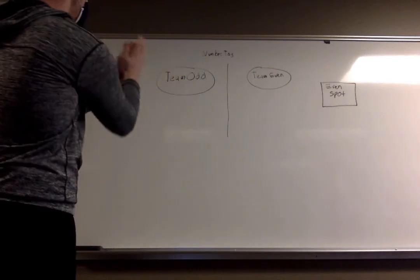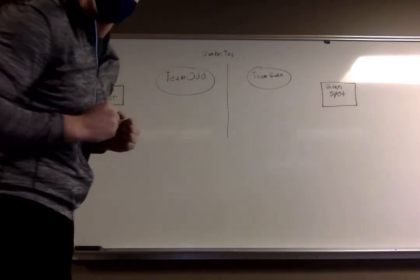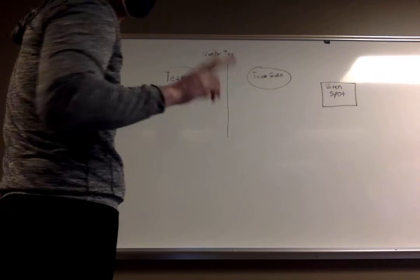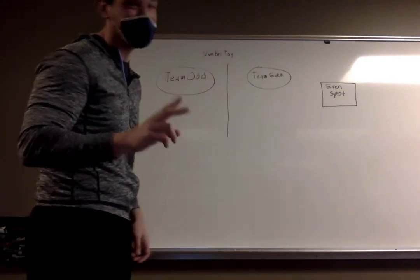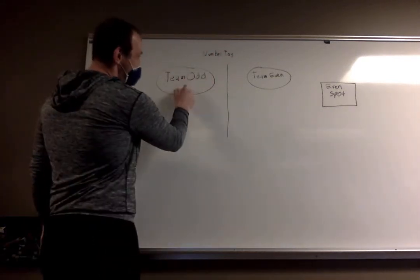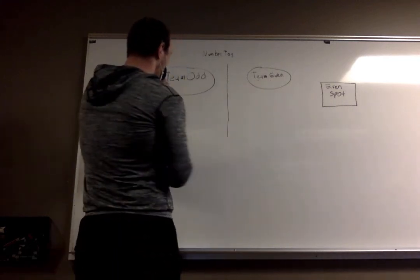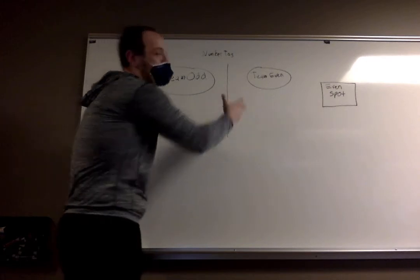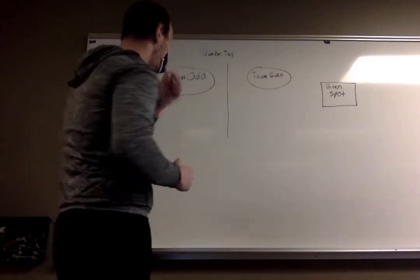I have a diagram on the board for a game called Numbers Tag, and this game is super duper fun. Split up your group of kids into two different groups and assign one group to either be odd numbers and the other group to be even numbers. Have them separated by maybe the half court line in a gym, or whatever you want to do to split the groups up.